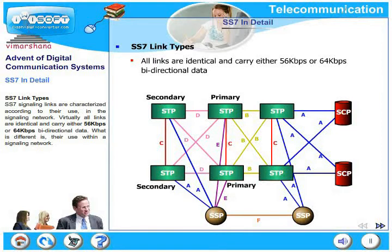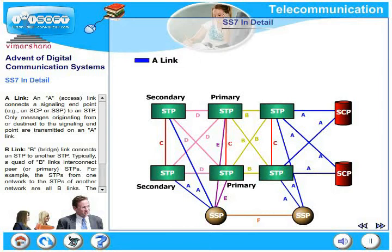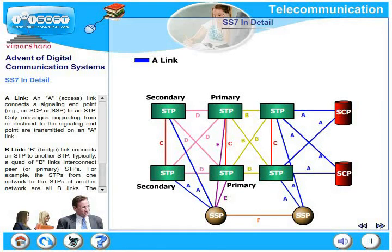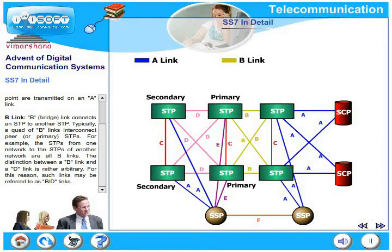An A-link connects a signaling endpoint — for example, an SCP or SSP — to an STP. Only messages originating from or destined to the signaling endpoints are terminated on an A-link. A B-link connects an STP to another STP. Typically, a quad of B-links interconnects paired STPs — for example, the STPs from one network to the STPs of another network. The distinction between a B-link and a D-link is rather arbitrary, so such links may be referred to as B- or D-links.